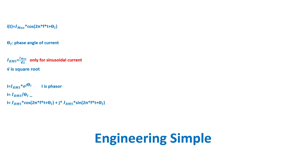We can write the current in exponential format as the RMS value of the current times e to the power of jθ. We can also write it in polar format as the RMS value of the current at the angle. In rectangular format, it is the RMS current times cosine(2πft + θ) plus j times the RMS current times sine of the quantity 2πft + θ.